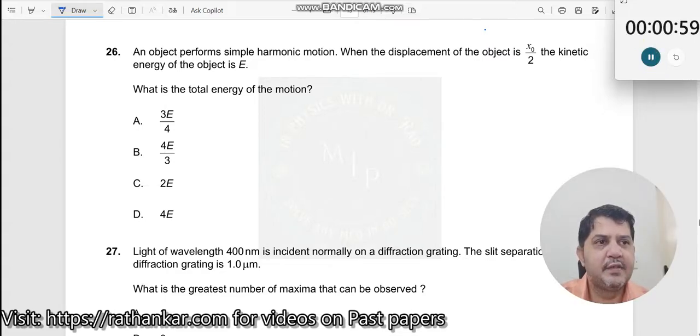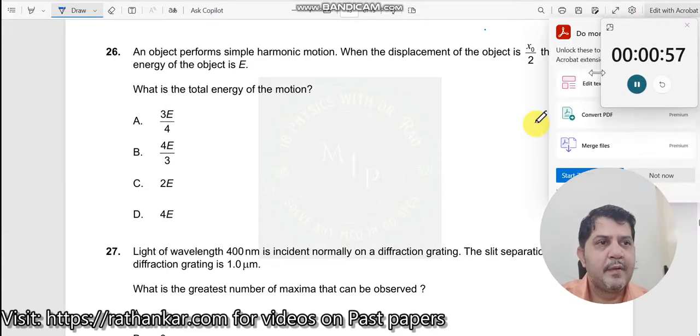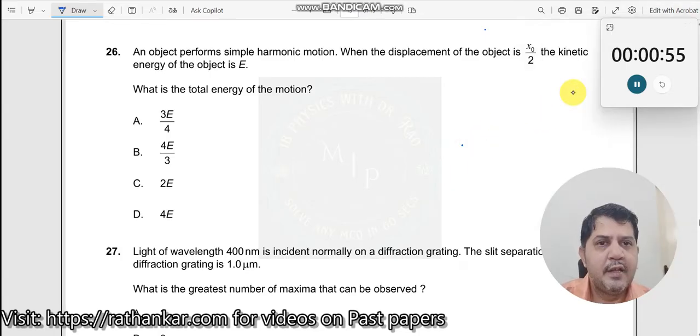Question number 26. An object performs simple harmonic motion. When the displacement of the object is x₀/2, the kinetic energy of the object is E. What is the total energy of the motion?